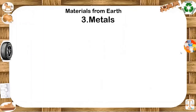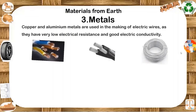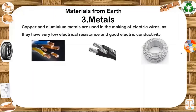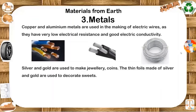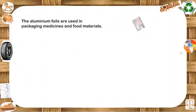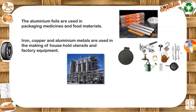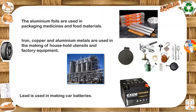Materials from earth — metal. We use metal to make vessels, bodies and engines of cars, buses, trains and aeroplanes, machine electric items, wires and many other materials. Copper and aluminum metals are used in making electric wires as they have very low electric resistance and good electric conductivity. Silver and gold are used to make jewelry and coins. The thin foil made of silver and gold are used to decorate sweets. Aluminum foils are used in packaging medicines and food materials. Iron, copper and aluminum metals are used in making household utensils and factory equipment. Lead is used in making car batteries.